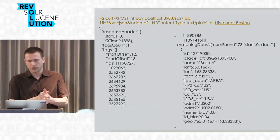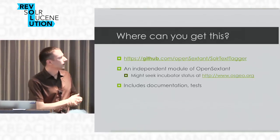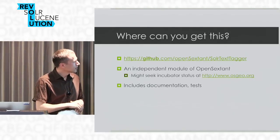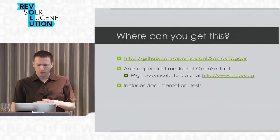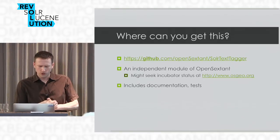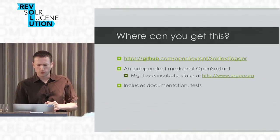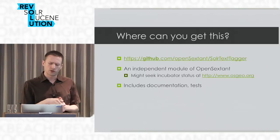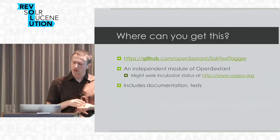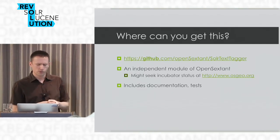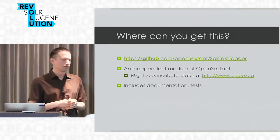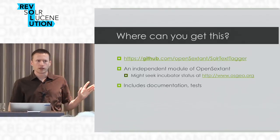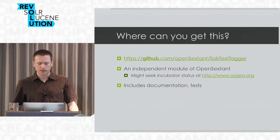It was very recently put on GitHub under the Open Sexton project as Solr Text Tagger — it's an independent module. We're thinking of eventually putting Open Sexton in all its parts under OSGEO as an incubator, though I haven't formally done that at all. It's independently documented and tested.